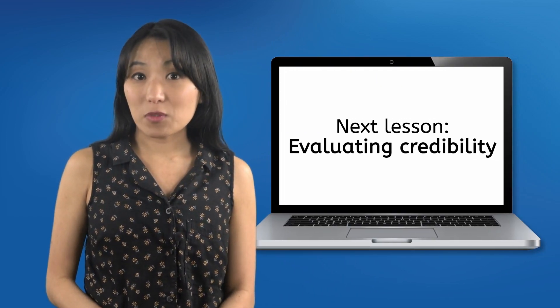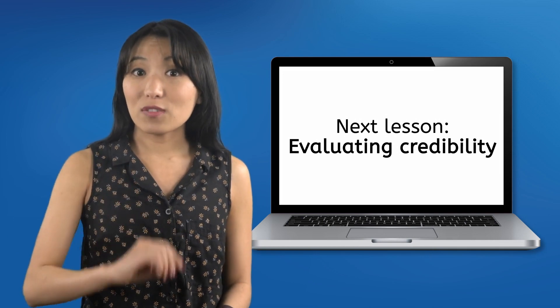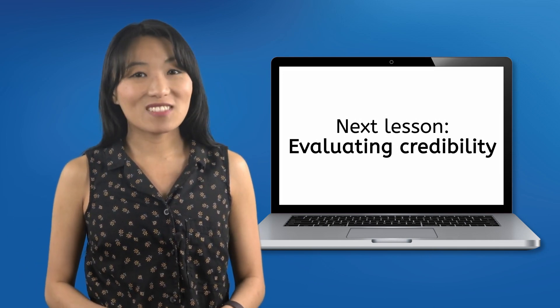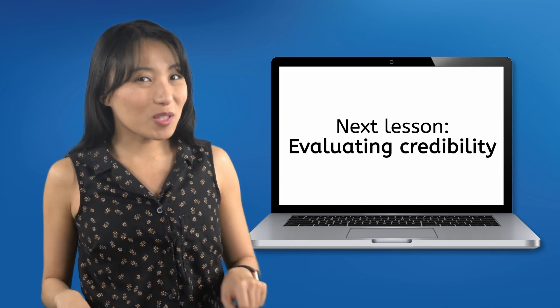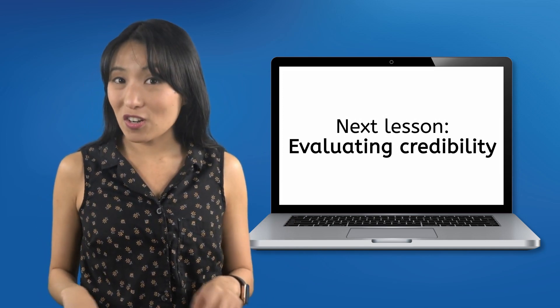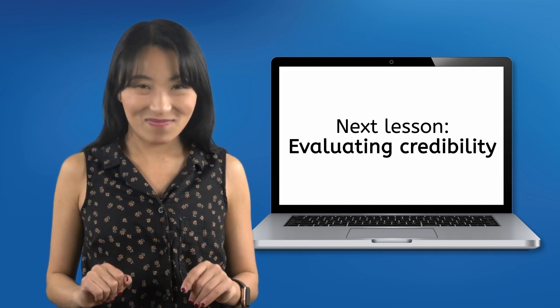Biased information is one thing, but some people actually go a step further — they just post blatant lies on the internet. And once those lies start getting spread around, it's almost impossible to fix the damage done. A lot of people will go the rest of their lives thinking those lies are the truth. In the next lesson, you'll learn how to evaluate whether information is credible so you can avoid misinformation on the internet. Until then, remember: your brain is the smartest computer you'll ever have, so keep it charged and never stop updating it. See you next time.